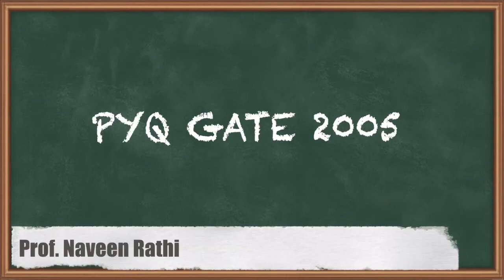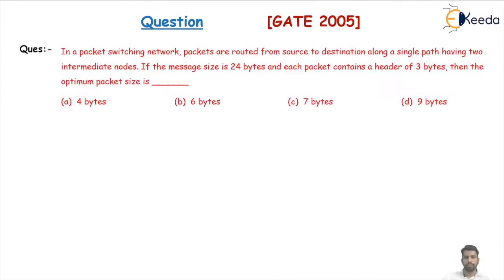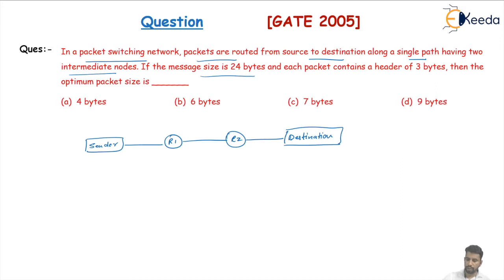Hello students, this is a GATE previous question from GATE 2005. This question is based on the circuit switching and packet switching methods. The question states: in a packet switching network, packets are routed from source to destination along a single path having two intermediate nodes. For example, this is a sender or source machine, with two intermediate nodes Router R1 and Router R2, and here is the destination machine. All packets are transmitted along this single path.